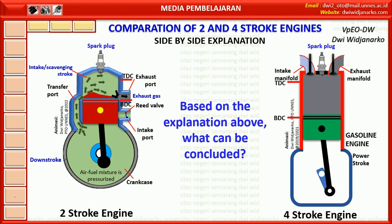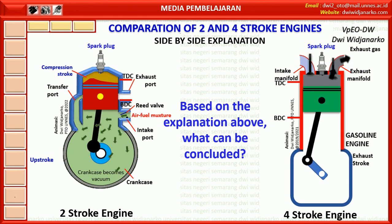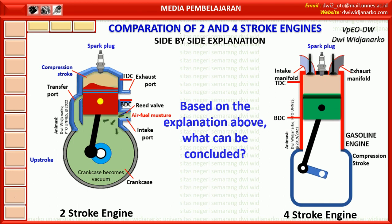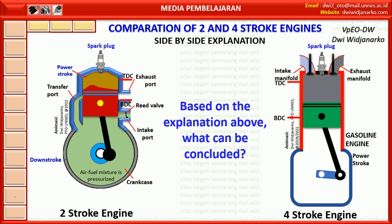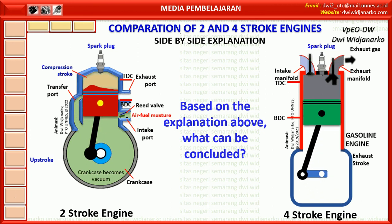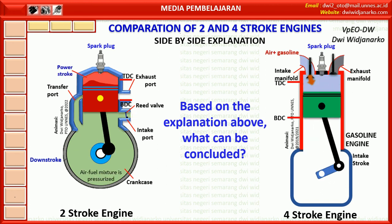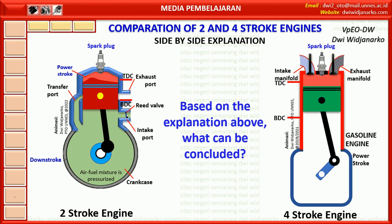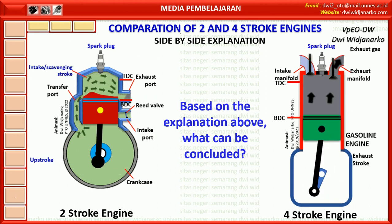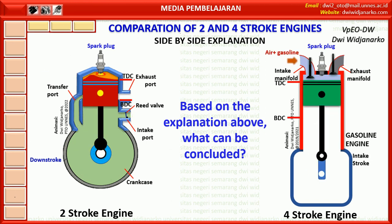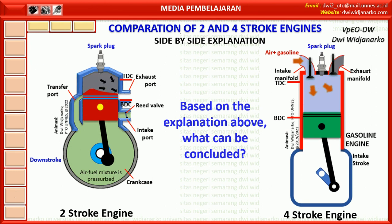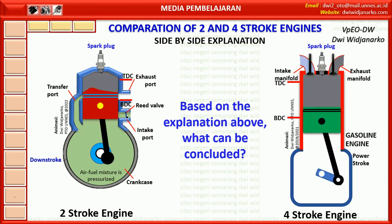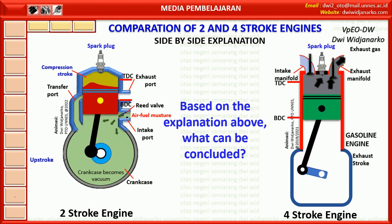Based on the explanation above, the conclusions are: 1 — In a 2 stroke engine, combustion occurs every 1 revolution of the crankshaft, while in a 4 stroke engine combustion occurs every 2 revolutions. 2 — In a 2 stroke engine, the intake of the air fuel mixture into the cylinder occurs simultaneously with the exhaust of combustion gases when the piston is around bottom dead centre, whereas in a 4 stroke engine the intake occurs over one full piston stroke from top dead centre to bottom dead centre. 3 — In a 2 stroke engine, the crankcase functions as a suction chamber and temporary storage for the air fuel mixture before it enters the cylinder. On a 4 stroke engine, the crankcase is not used as part of the engine cycle.